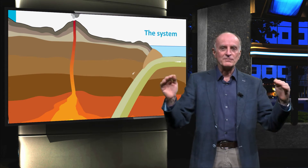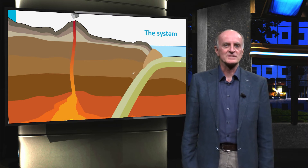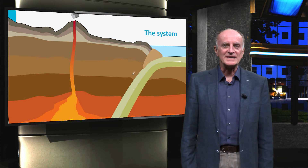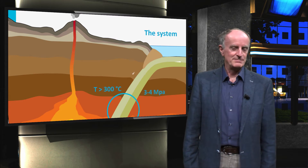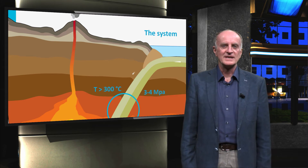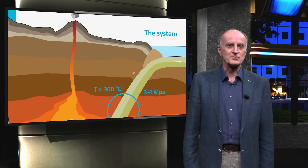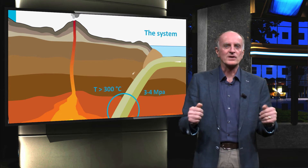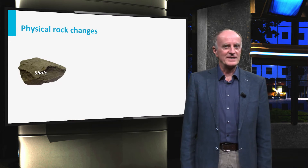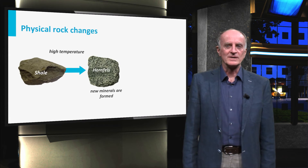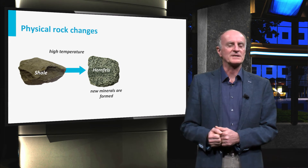When tectonic plates converge towards each other, a large region of deformation occurs, where rocks are squeezed and deformed, typically at high temperatures. These temperatures can be of several hundred degrees, and pressures in excess of 3 or 4 MPa, which corresponds to the weight of a column of several kilometers of rocks. With higher temperatures, all minerals become unstable, and new ones will form, providing very different aspects of the rock.